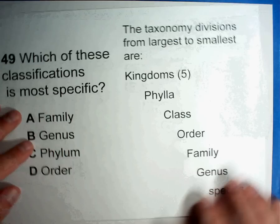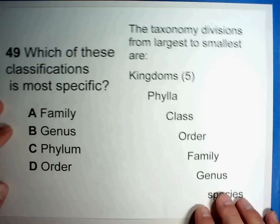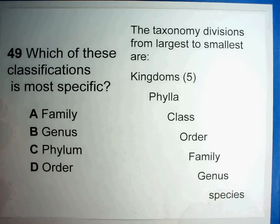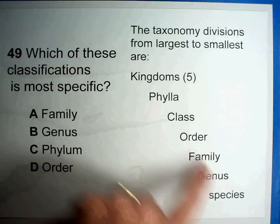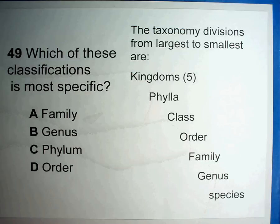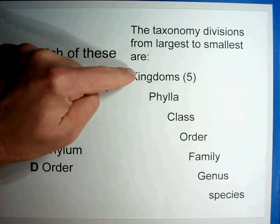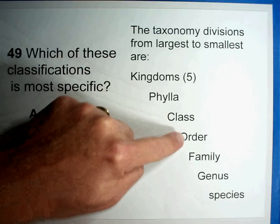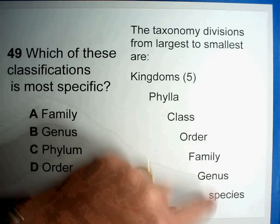Here's an example that came from a taxonomy test — you'll want the information on the right. This is the way that we name animals within the kingdoms. Kingdoms are the broadest category, followed by phylum, class, order, family, genus, and species.